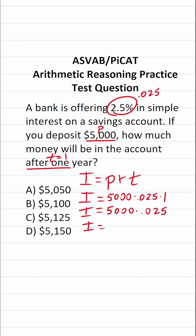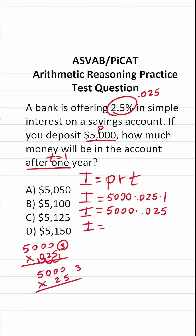To work this out, we have 5,000 times 0.025. To do this math, we take the decimal in 0.025 and shift it three places to the right, so this becomes 5,000 times 25, with three decimal places to move back into our answer. 5 times 25 gives us 25 in the ones position. Then multiplying by 2 with a zero placeholder gives us 10. Adding it all up: 0, 0, 0, 5, 2, 1. Bringing in our three decimals gives us 125.